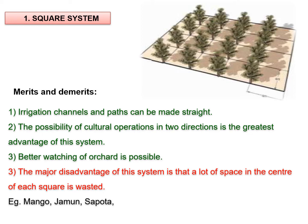A few advantages of this system are: irrigation channels and paths can be made straight, and the possibility of cultural operations in two directions is a greatest advantage. Better watching of the orchard is also possible. One of the major disadvantages is that there is a lot of wasted space in the center of each square.